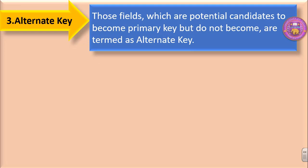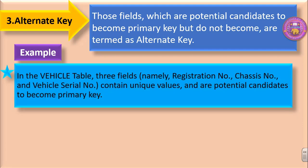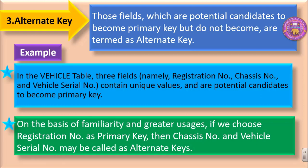The third one is alternate key. Those fields which are potential candidates to become primary key but do not become primary key are termed as alternate keys. In the vehicle table, if we choose registration number as primary key on the basis of familiarity and greater usage, then chassis number and vehicle serial number may be called alternate keys — those fields which are capable of becoming primary key but do not become primary keys are termed as alternate keys.